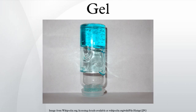Gels consist of a solid three-dimensional network that spans the volume of a liquid medium and ensnares it through surface tension effects. This internal network structure may result from physical bonds or chemical bonds, as well as crystallites or other junctions that remain intact within the extending fluid.